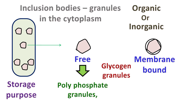When the extracellular phosphate levels decrease, these polyphosphate granules provide phosphate, which is used for ATP generation and making DNA and RNA.